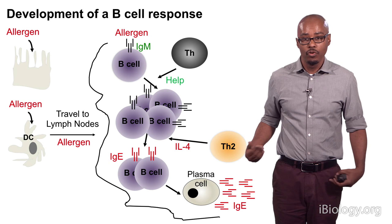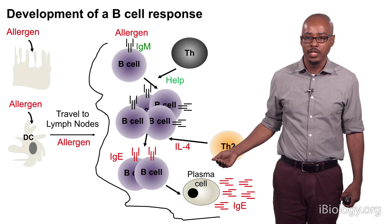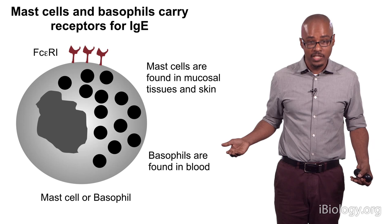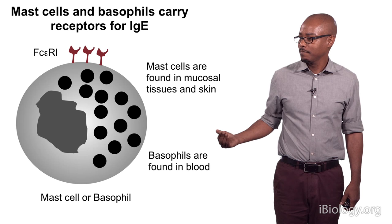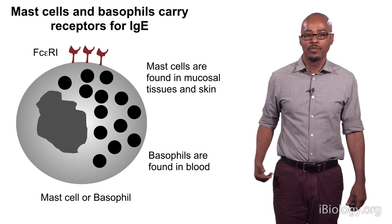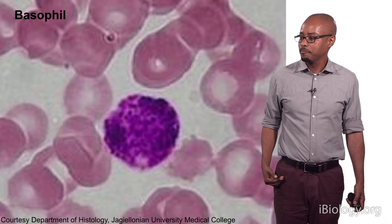The first time you're exposed to an allergen, you don't really notice it, but your immune system is responding and generating this whole process that leads to the production of IgE. The second time you get exposed to the allergen, you're more susceptible to developing an allergic response. That occurs because there are cell types in the body called mast cells or basophils that have receptors for IgE. Mast cells are found in the mucosal areas of tissues — the respiratory and GI tract and the skin — and basophils are found in the blood. Both cell types have these receptors for IgE.